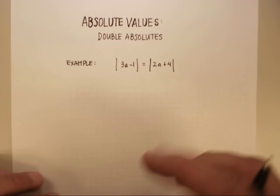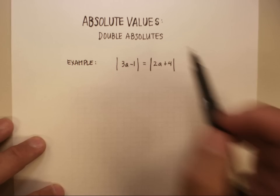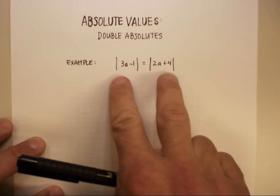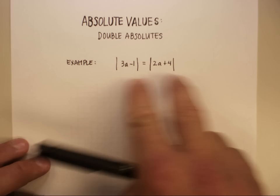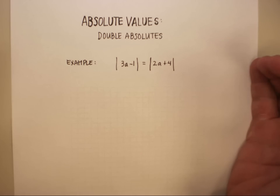Okay, in this video I'm going to show you how to solve some variations on absolute values, and that's what do you do when you have two absolute value signs in the same equation. We'll just talk about the rationale behind that.